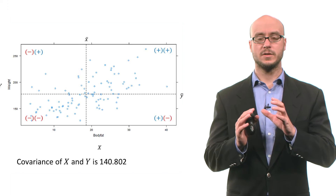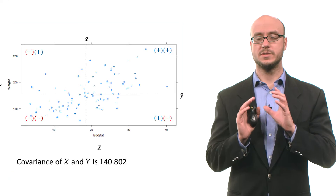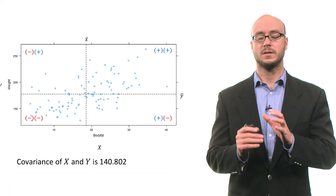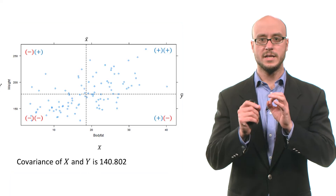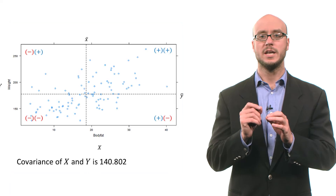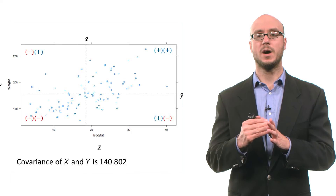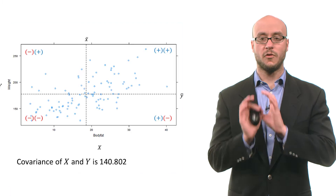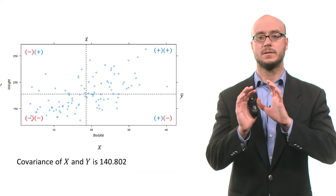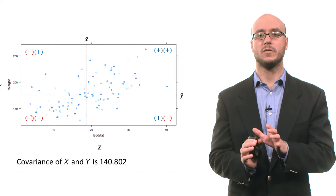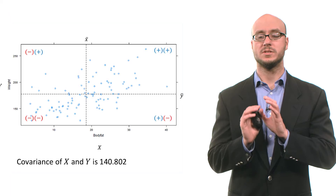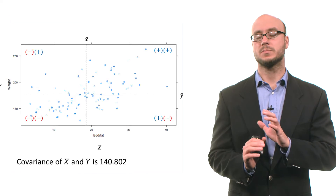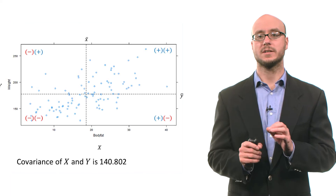You can see that the covariance is based on reorienting each data point in reference to the mean of x and the mean of y. From that, we can calculate the covariance, which is simply a measure of the average of the cross products between x and y.